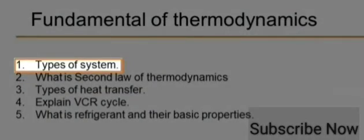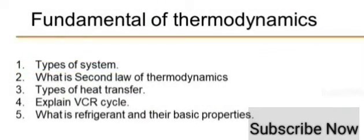Types of systems are three types: open, closed, and isolated. In the open system, heat and mass are both transferred. In the closed system... And in the isolated system, there is no heat transfer, no mass transfer.